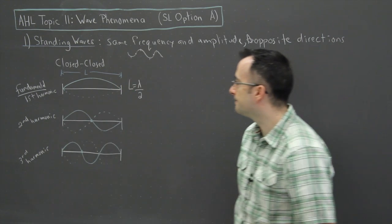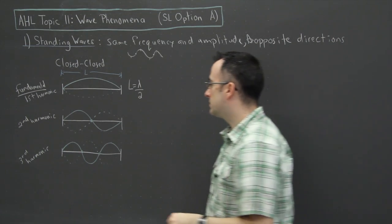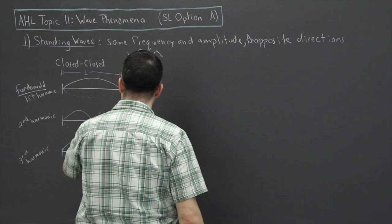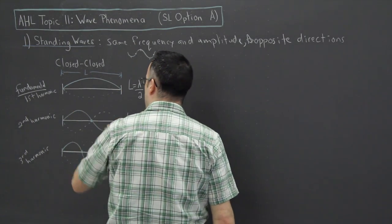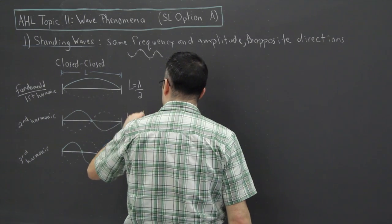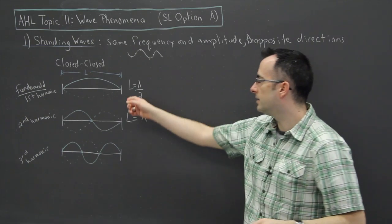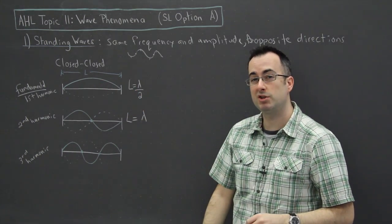So we could say that L is equal to lambda over two. That's what we could say here. Now on the next one, take a look at that. This one right here, we have L equals, and we have one half plus another half. So we have two halves of the wavelength. In other words, we have the full wavelength. So remember, L is the length of this, and lambda is the wavelength, and that's measured in meters.